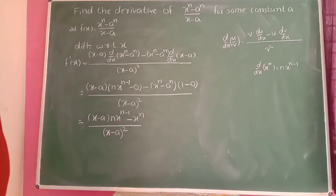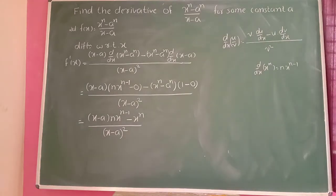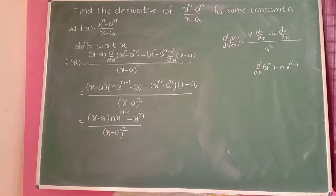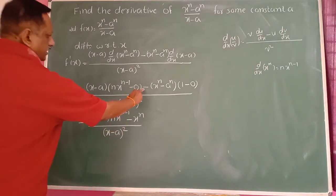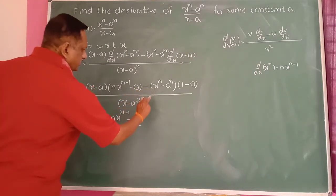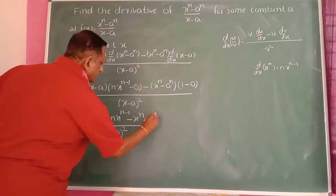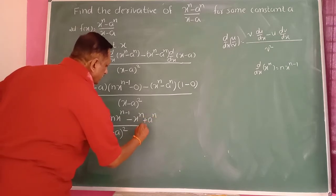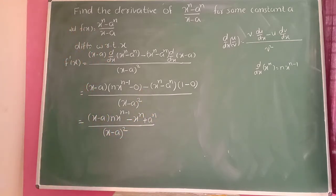This is the answer. Taking the minus inside: minus x^n minus (minus a^n), giving plus a^n. So this is the final answer.